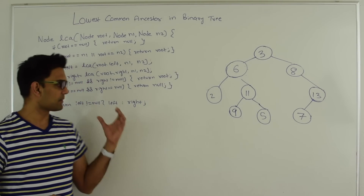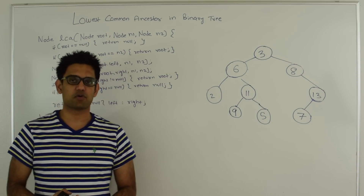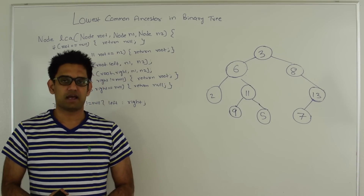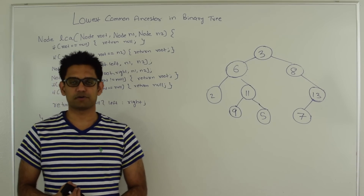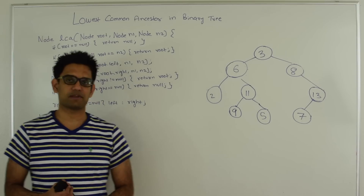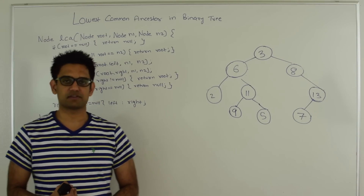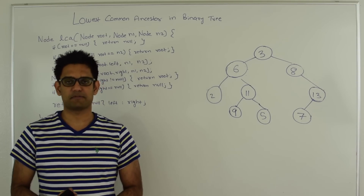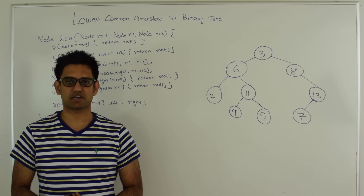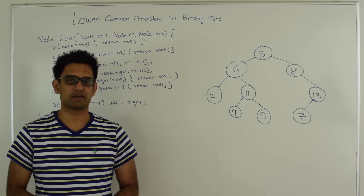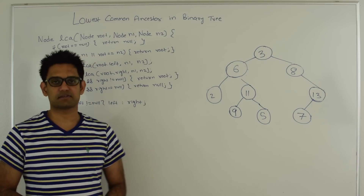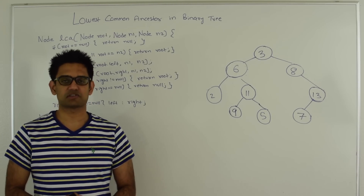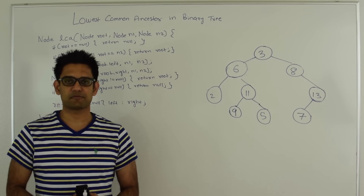The runtime complexity for this algorithm is O(n). That's all I have to talk about on lowest common ancestor. Please like, share, and comment on this video. Check out my Facebook page and GitHub link. The link to the code is in the description. Thanks for watching!